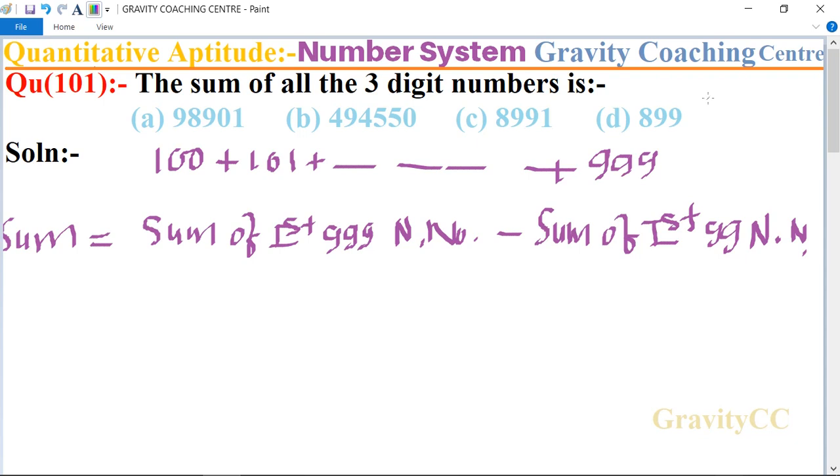And we know that the formula of sum of n natural numbers is n times n plus 1 upon 2. So we use this formula in this question. Sum of first 999 natural numbers equals, so n is